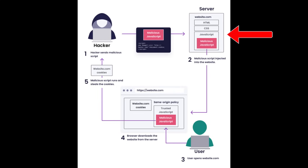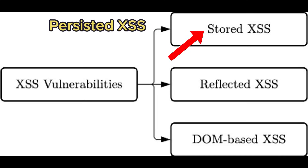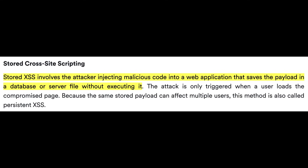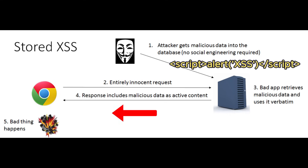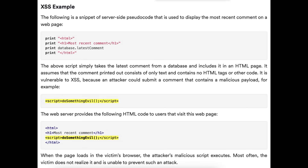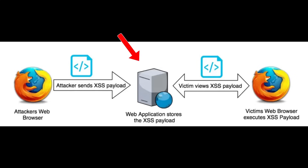XSS vulnerabilities are commonly categorized into three main types: stored or persistent XSS, reflected XSS, and DOM-based XSS. Stored XSS occurs when the attacker's payload is saved by the server, typically in a database, and served to users whenever they visit the affected page. For example, a malicious comment in a blog post or forum that executes in every visitor's browser. Stored XSS is particularly dangerous because it can impact multiple users over a long period, and it can be used to steal cookies, implement keyloggers, or create self-propagating worms. The injected code is persistent and automatically delivered to users without requiring any specific interaction beyond viewing the page.